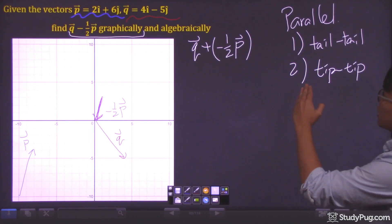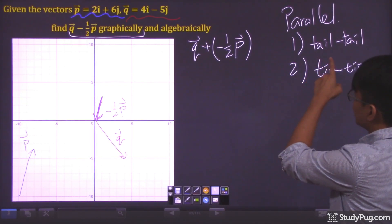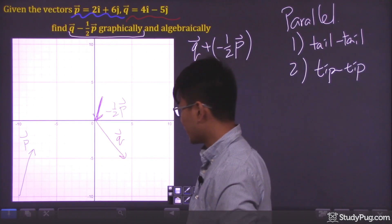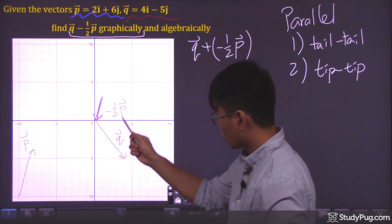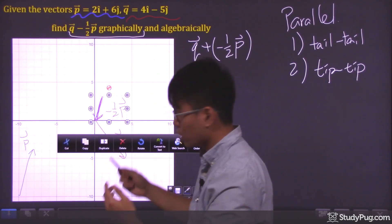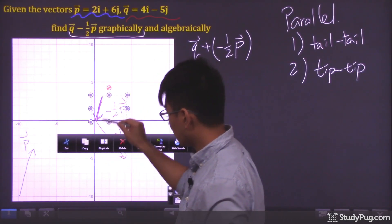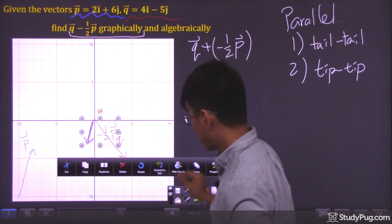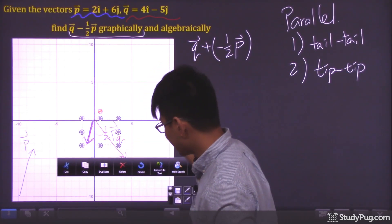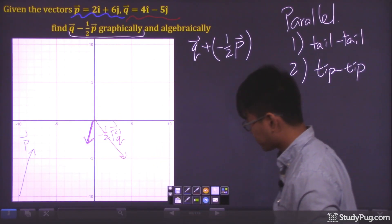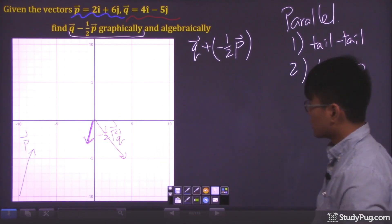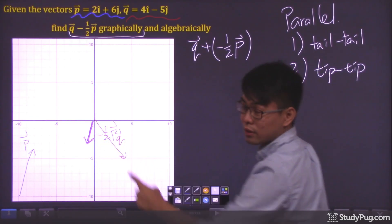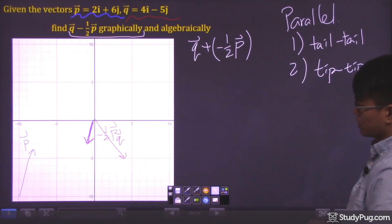Using the parallelogram method, we first need to get the tail of one vector connected to the tail of the other. So let's move the purple vector — it doesn't matter which vector we move. Now the tails of the two vectors are connected at one point, so the first step is done.